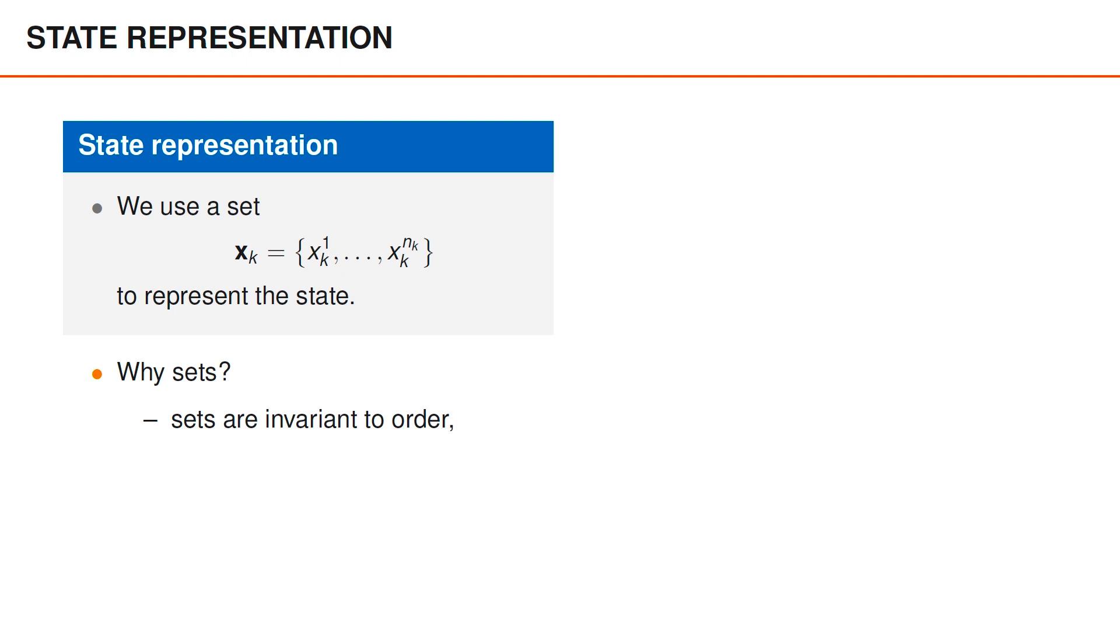This probably sounds rather technical, but several appealing properties follow from this. For instance, whenever objects appear and disappear from the scene, we can easily add or remove elements from the set. And we don't need to come up with a rule for how to order the elements in the matrix, whenever elements are added or removed. Also, we normally want to estimate the set of object states, since that set contains the state vectors of all the nearby objects, and it's therefore natural to also use it as a state representation.